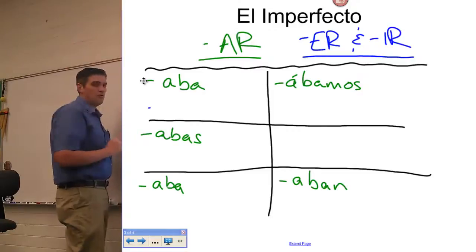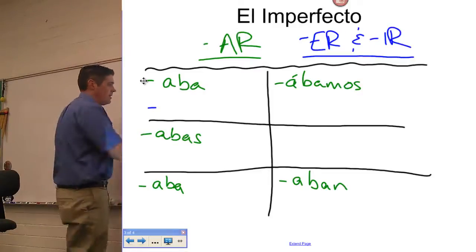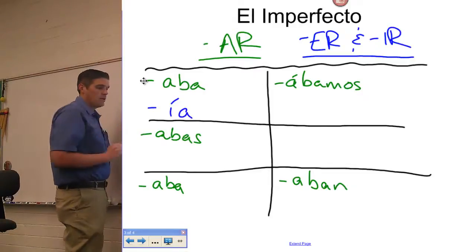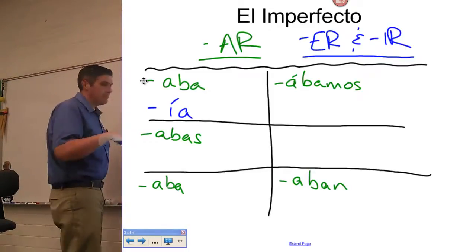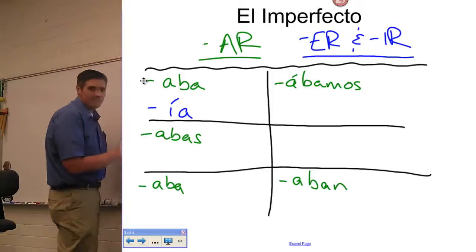And the imperfect in the ER IR form. Do you remember what those are? Ella comía. Ella siempre comía helado. Helado.